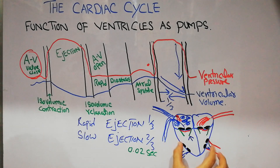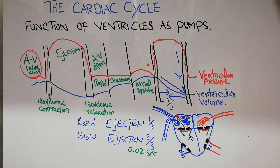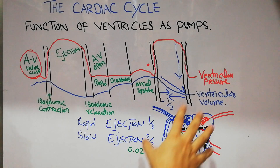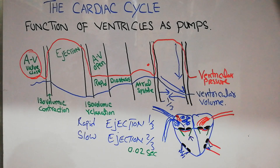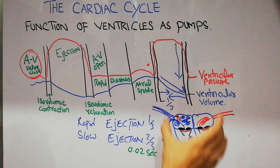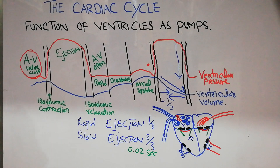Then the pressure in the ventricles started increasing again with blood not yet going out — isovolumic contraction. The contraction became strong enough to open the aortic and pulmonary valves, sending blood to the lungs and the whole body. After ejection, the pressure in the ventricle starts decreasing again — isovolumic relaxation — the volume remains the same but relaxation is occurring, and then the cycle repeats.